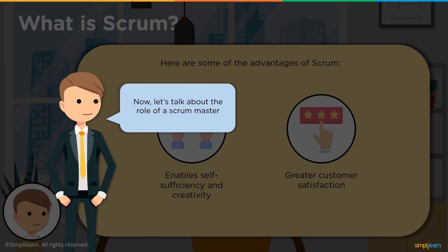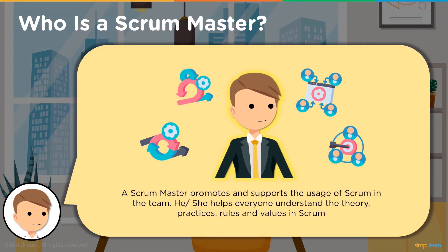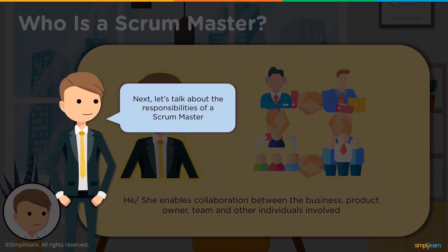Next, let's talk about the role of a Scrum Master. A Scrum Master is an individual who promotes and supports the usage of Scrum practices in the team and the organization. Scrum Masters have a high-level view of the project and help team members perform their tasks better without having to deal with obstacles and distractions. A Scrum Master helps the team understand the theory, rules, and values of Scrum, and enables the business, the product owner, the Scrum team, and other individuals to work together in harmony.